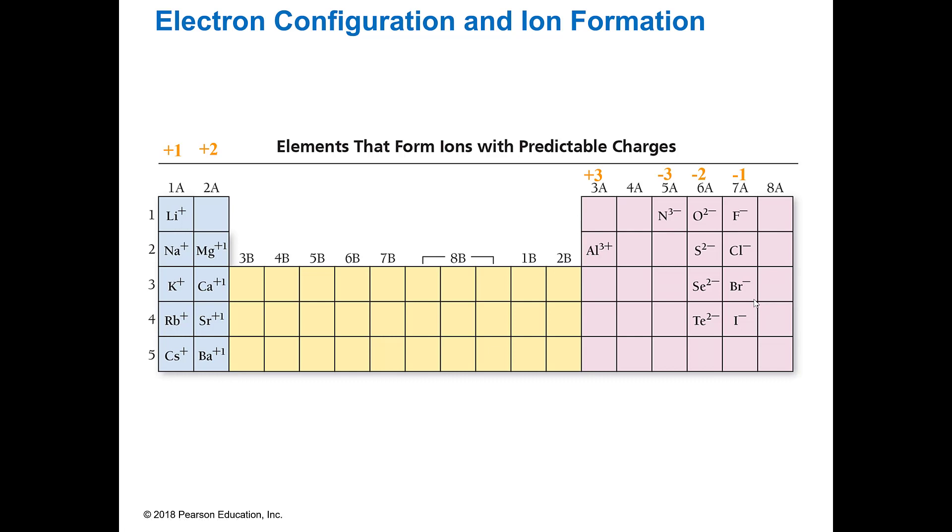So the way this pattern works is that we already said that this means you've got one valence, two valence, three valence. Whatever that number is, that's how many valence electrons you have. And then when they form ions, everything in the alkali metals is going to form a plus one. The alkaline earth metals is going to form a plus two. Those in group 3A are going to be a plus three.